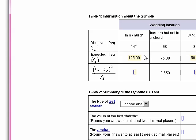Now that we have the expected frequencies, all we need to do is compute this expression: the observed minus the expected frequency, that quantity squared, divided by the expected frequency. Let's do it for the outdoor category since I already have the 50 in there. It's going to be 35 minus 50, that quantity squared, divided by 50 — because 50 is the expected frequency.